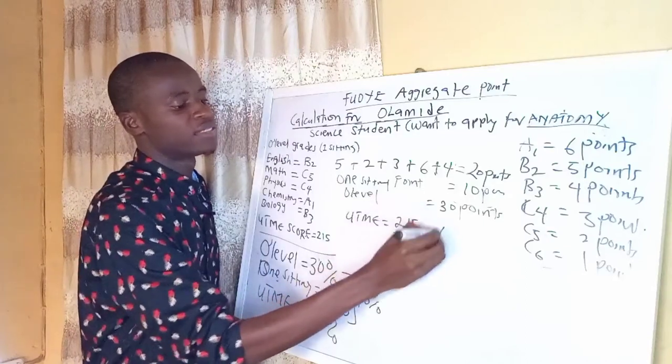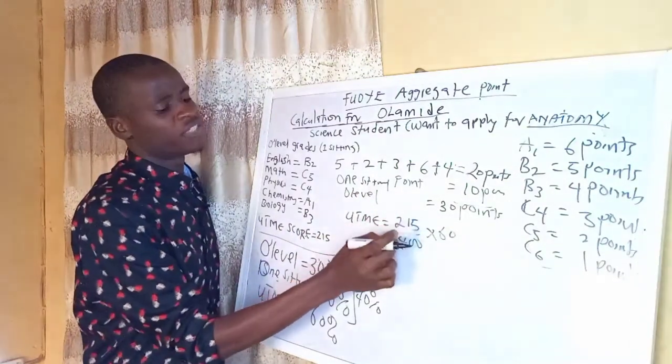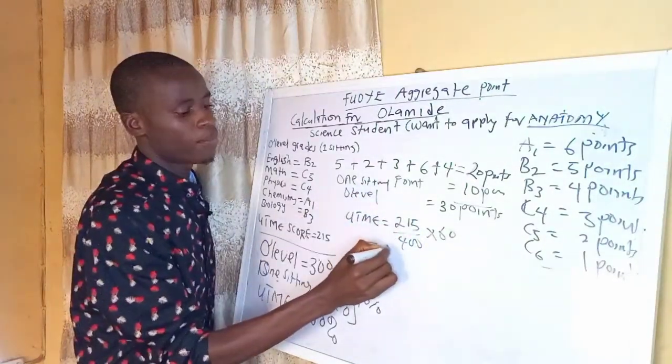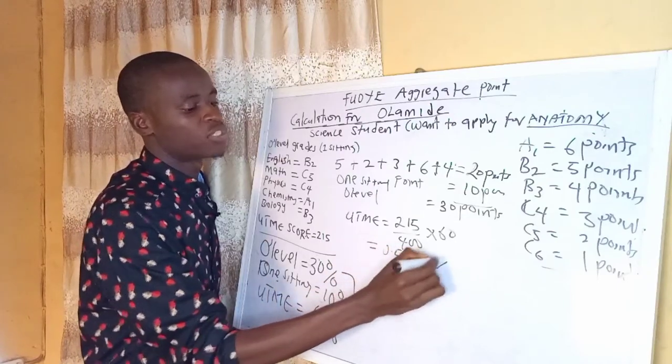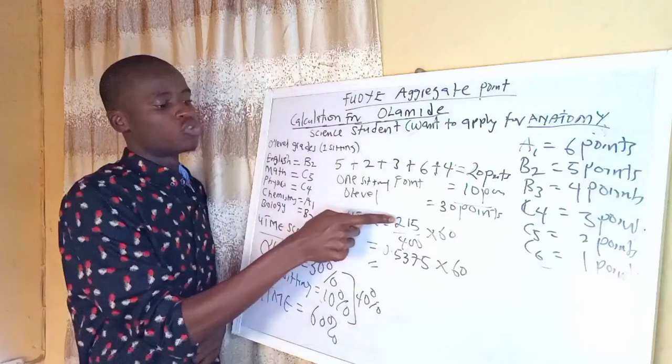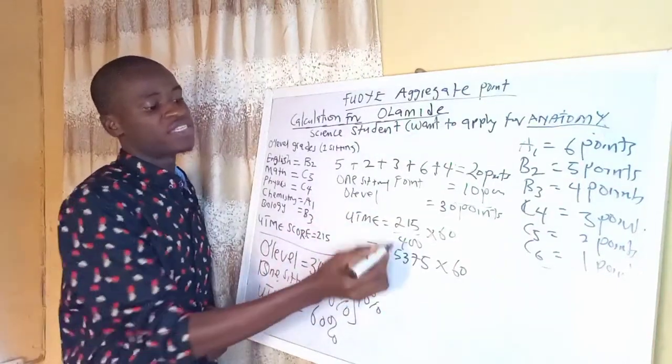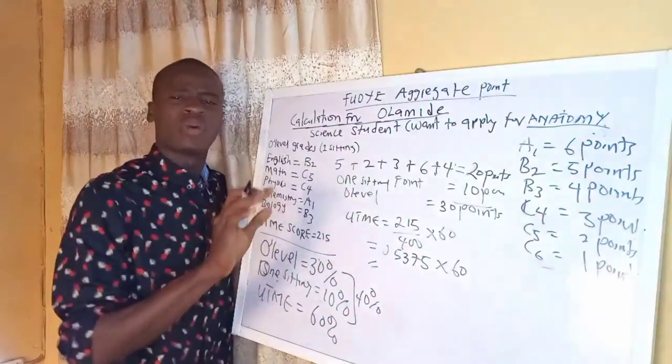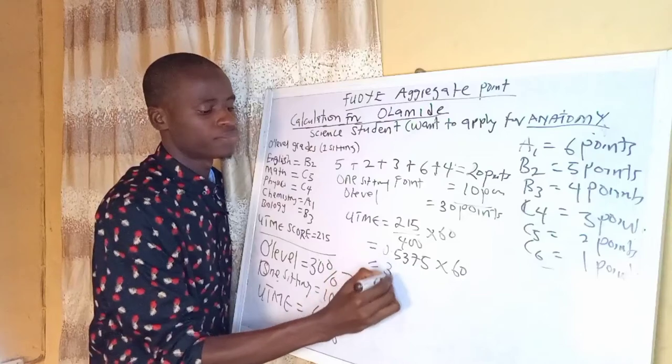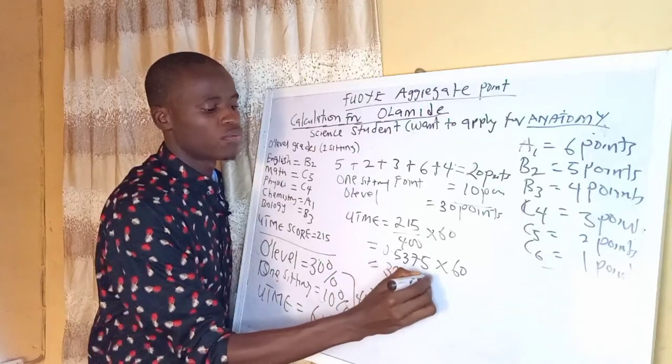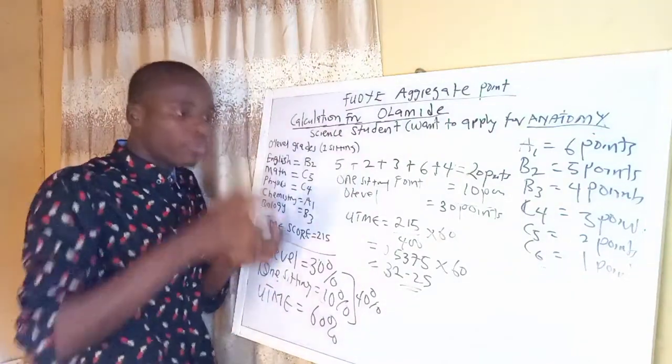The calculation is going by 215, that is the score, all over 400, multiply by 60. 215 over 400 is 0.5375 multiplied by 60.